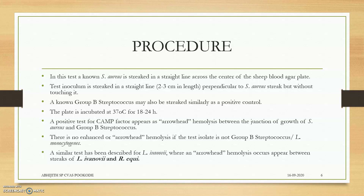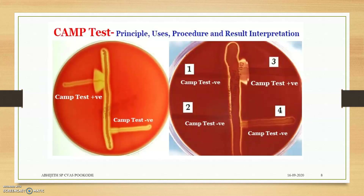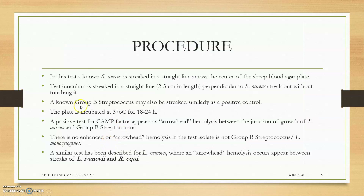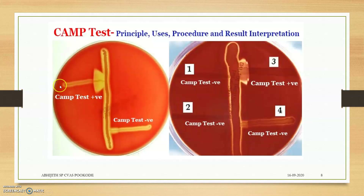For the procedure: Staphylococcus aureus is streaked in a straight line across the center of a sheep blood agar plate. The test inoculum is then streaked in a straight line, two to three centimeters in length, perpendicular to the Staphylococcus streak but without touching it. We will be seeing photos — here is the Staphylococcus aureus streak in the center, and the test inoculum streaked up to here only.